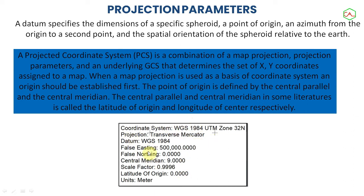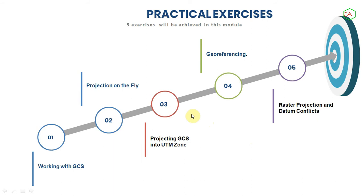The projection parameters summarize all the attributes of your projection in a map — this is a typical kind of projection parameters cropped out from a produced map. Having seen an introduction to map coordinate systems, mapping, and projections, we'll now practically look at: working with GCS projection on the fly, projecting into different zones from GCS to UTM zones, georeferencing, and rectification of raster projection and datum conflicts. This is what we're going to do in these practical lessons.